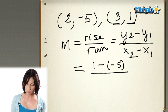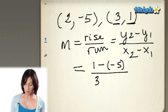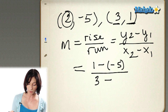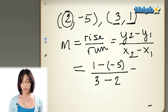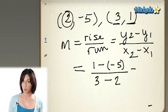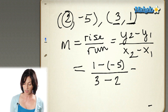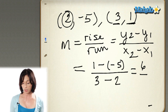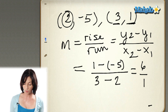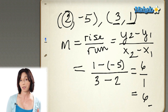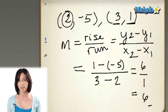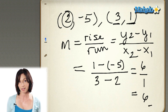On the bottom I'm going to put a 3, and I'm going to subtract from it this x coordinate, this 2. So, 1 minus negative 5 is the same as 1 plus 5. 1 plus 5 is 6. And 3 minus 2 is 1. And 6 over 1, we can just rewrite as 6. So the line that joins the points (2, -5) and (3, 1) will have a slope of 6.